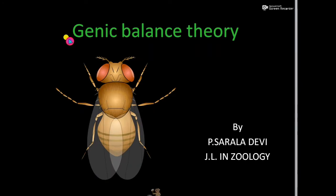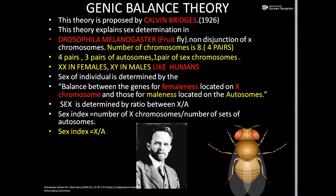Today we are going to learn about genic balance theory. This theory was proposed by Calvin Bridges while he was working on the non-disjunction of chromosomes, especially X chromosomes, in Drosophila melanogaster, which is also commonly known as the fruit fly.